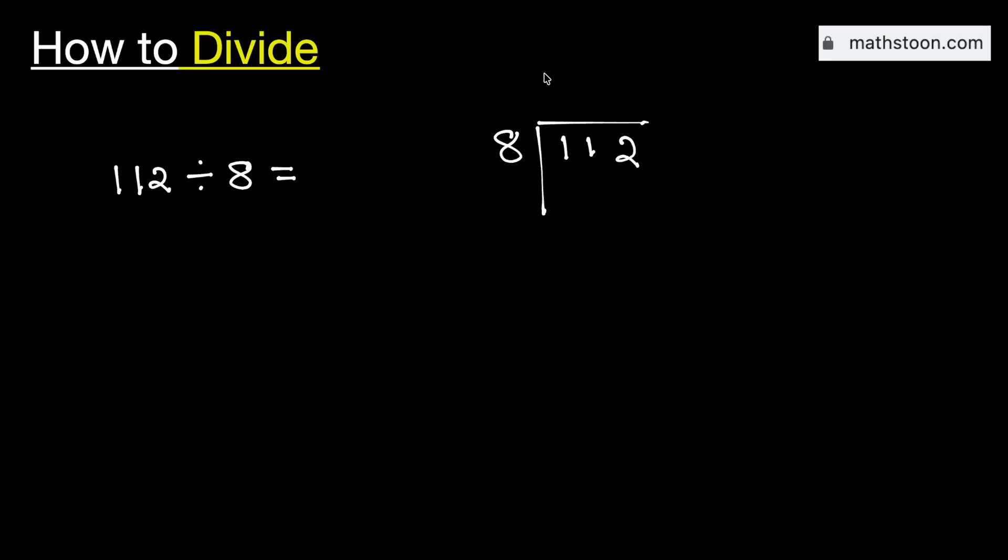Now see that 1 is less than 8, so we will consider the number 11. We know that 8 times 1 is equal to 8. Subtract, we get 3.